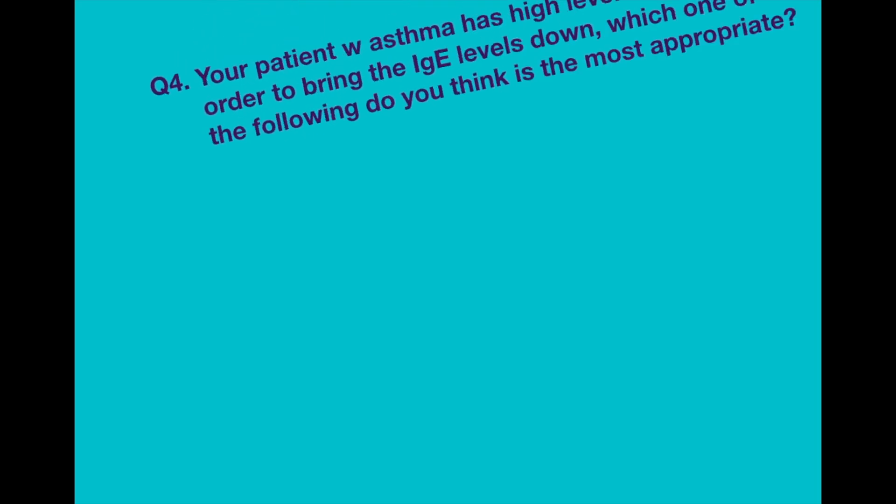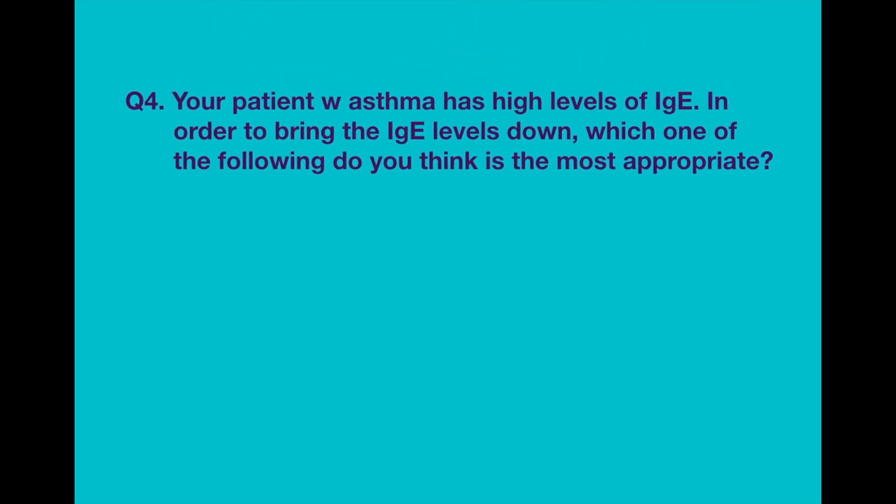Question number four. Your patient with asthma has high levels of IgE. In order to bring the IgE levels down, which one of the following do you think is the most appropriate? Option A: Theophylline. Option B: Omalizumab. Option C: Ipratropium.